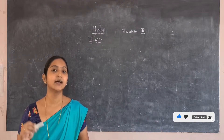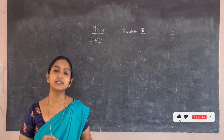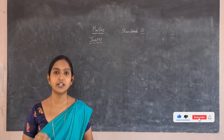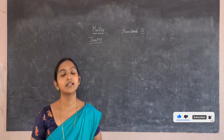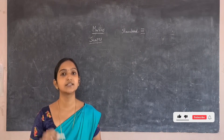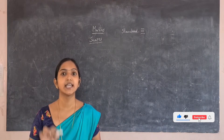Rectangle, Triangle, Pentagon and Circle — these are all shapes that you have learned in your previous lesson. Now let's learn about sides, vertices, and edges.